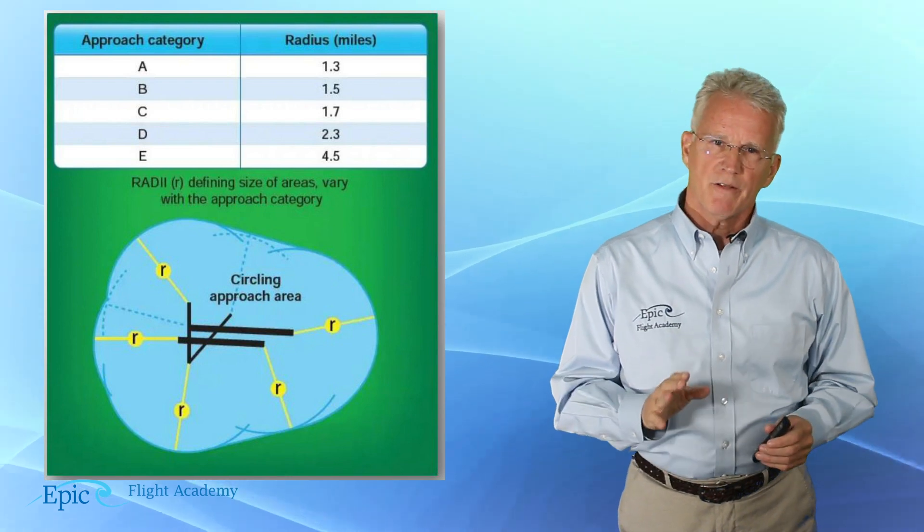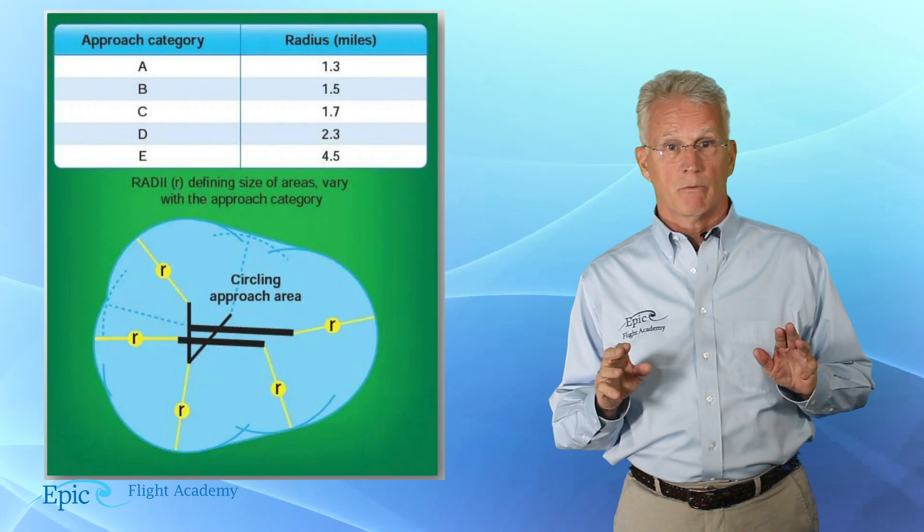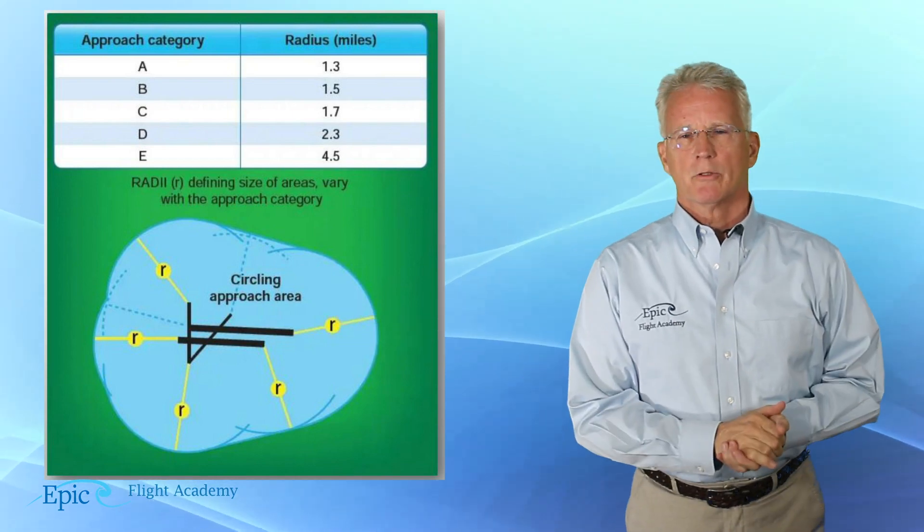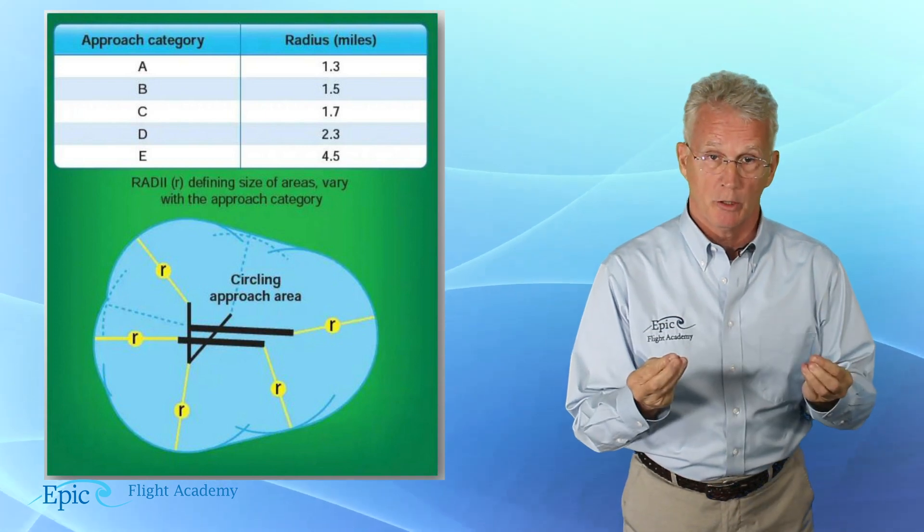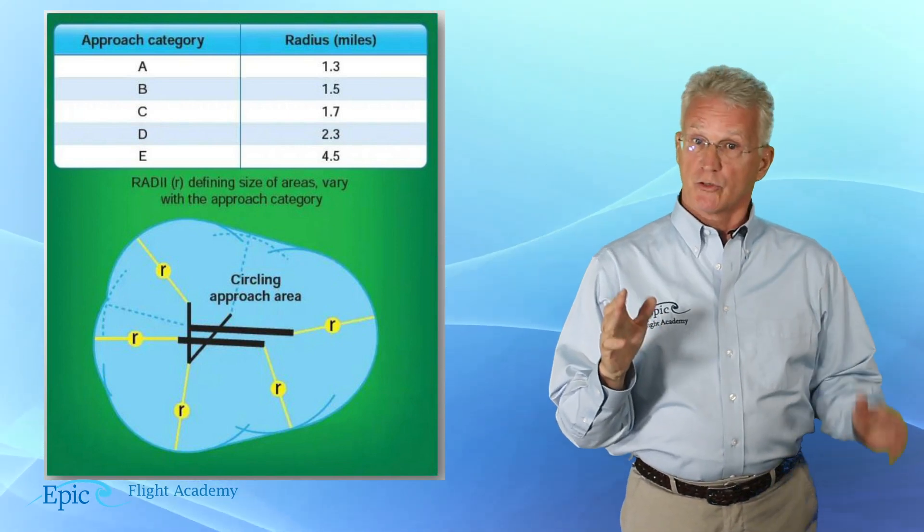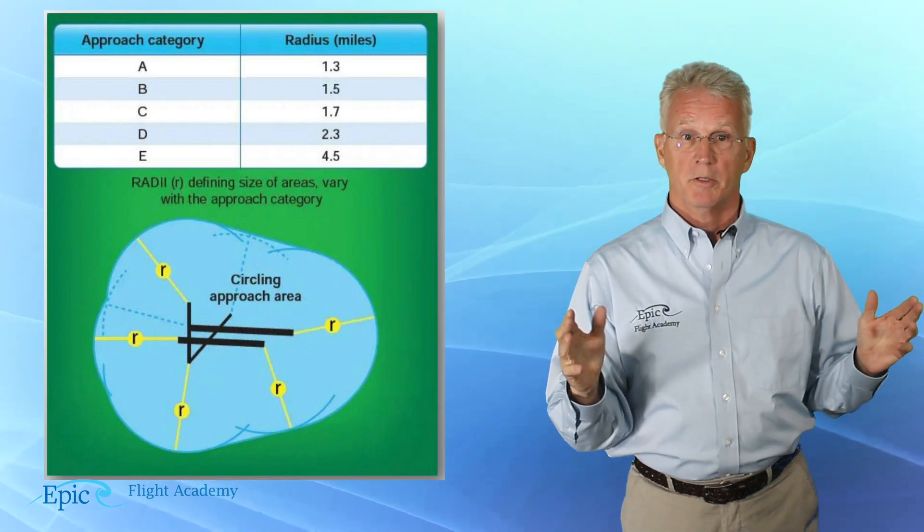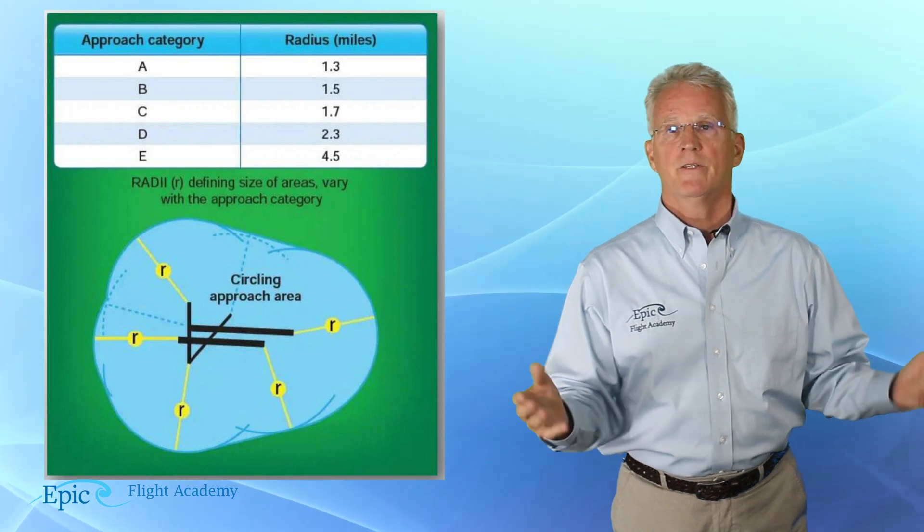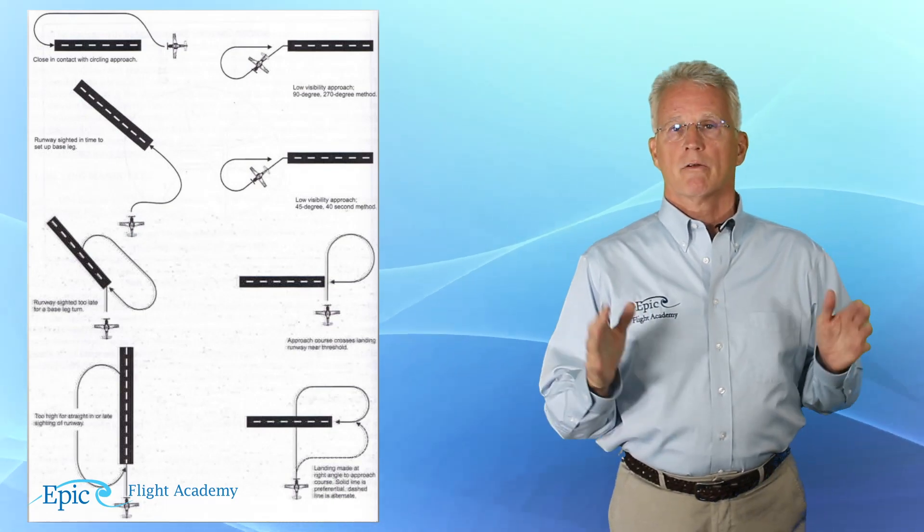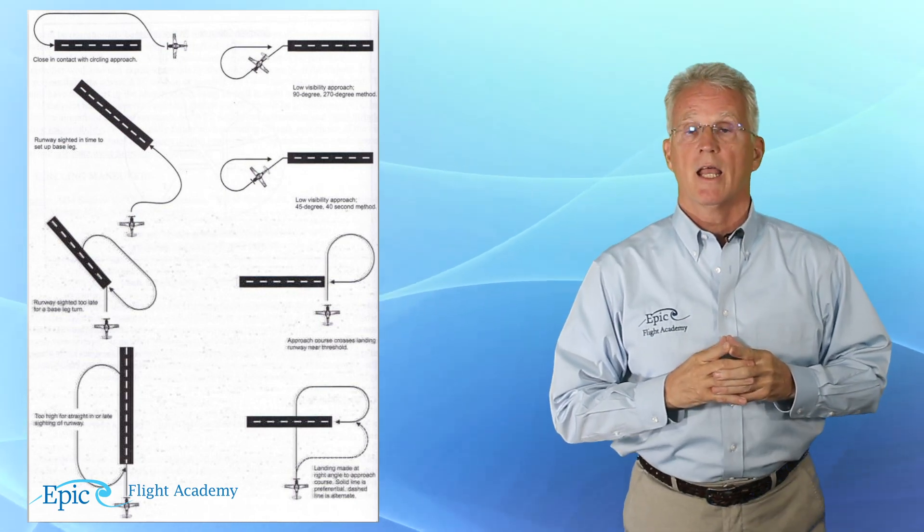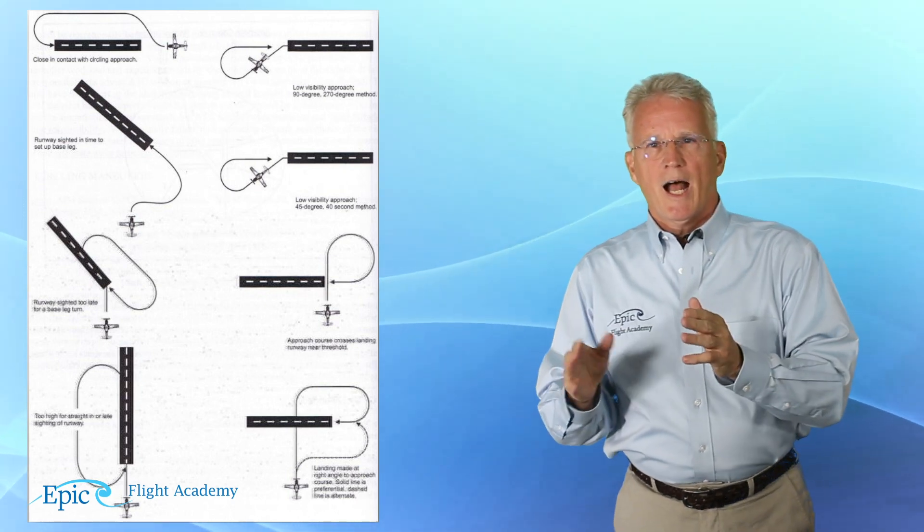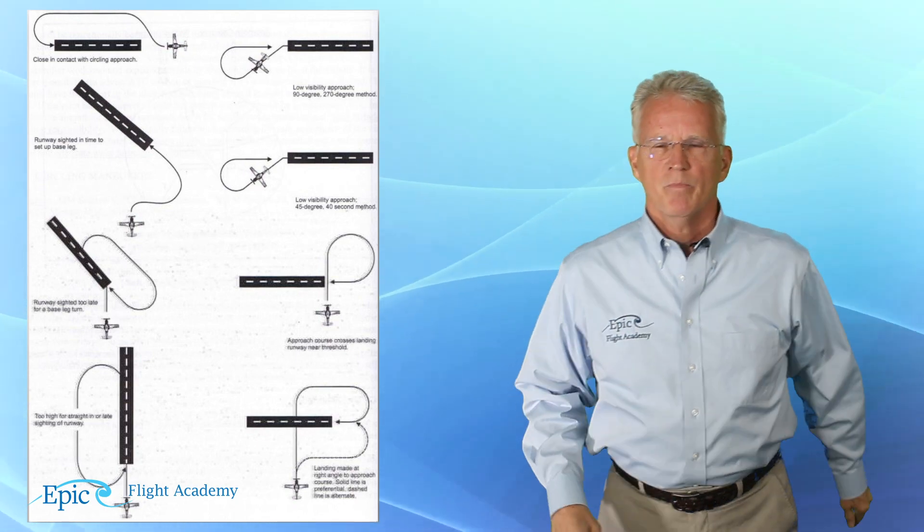Now the specific method of how to conduct a circle to the intended runway is really left up to you, the pilot. However, and your flight instructor will talk to you about this, it is preferred, and if you think about it, it makes perfect sense, to keep that circling maneuver as close to a standard traffic pattern as possible. Now if you take a look at our graphic in the left-hand column, you can see some examples of this aircraft that came into the airport using an IAP, instrument approach procedure, and is approaching the end of the runway either straight on or slightly offset.